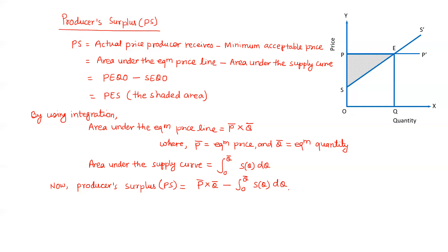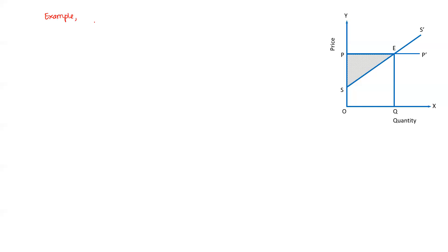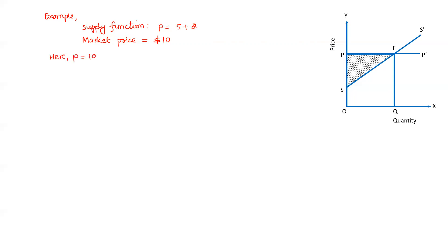Producer's surplus can be written as: P-bar multiplied by Q-bar minus the integral of the supply function with respect to q. This is the formula to calculate producer's surplus. Now let's take an example. The supply function is P equals 5 plus q, and the market price is $10.